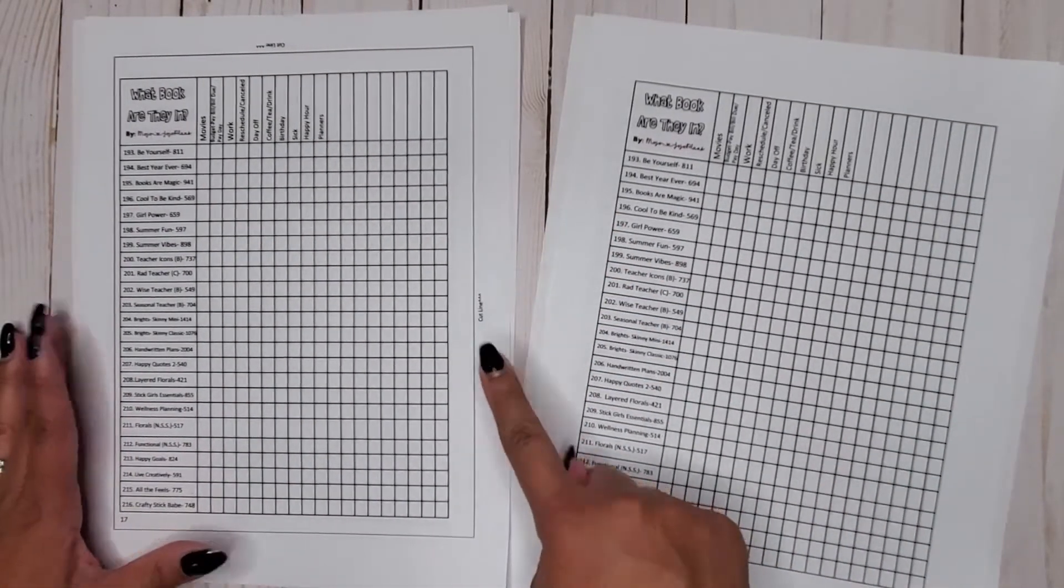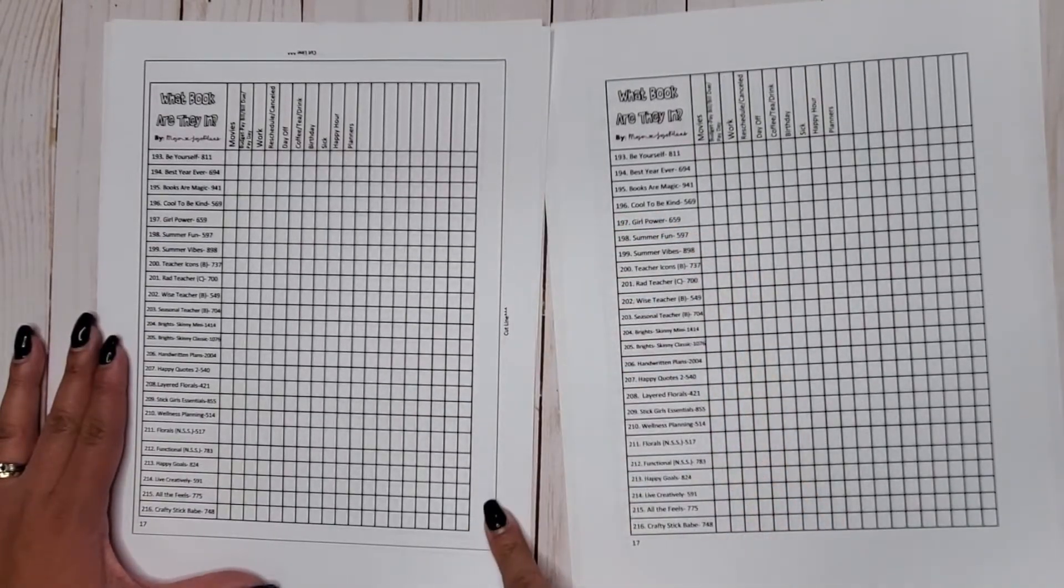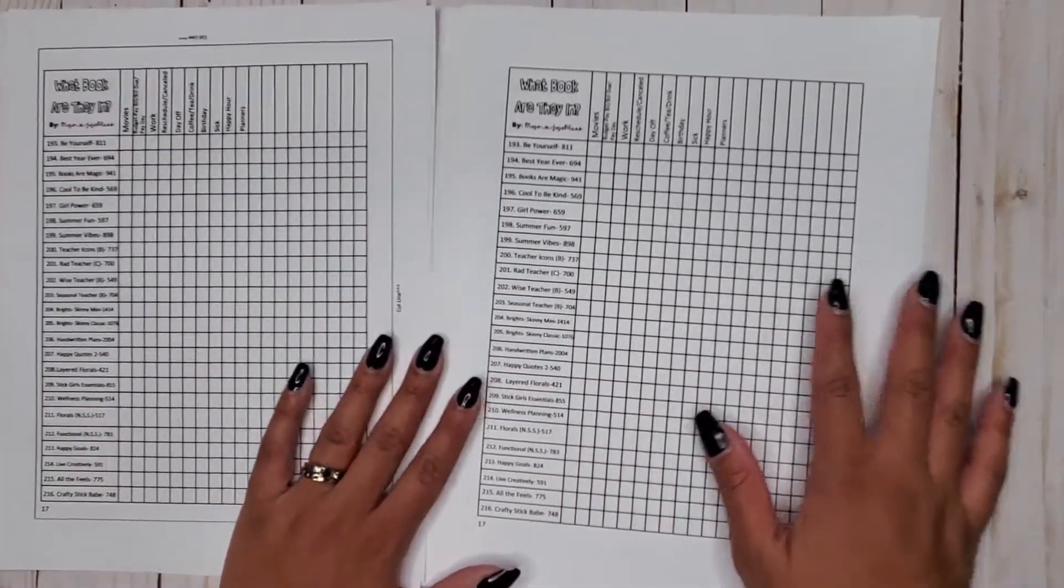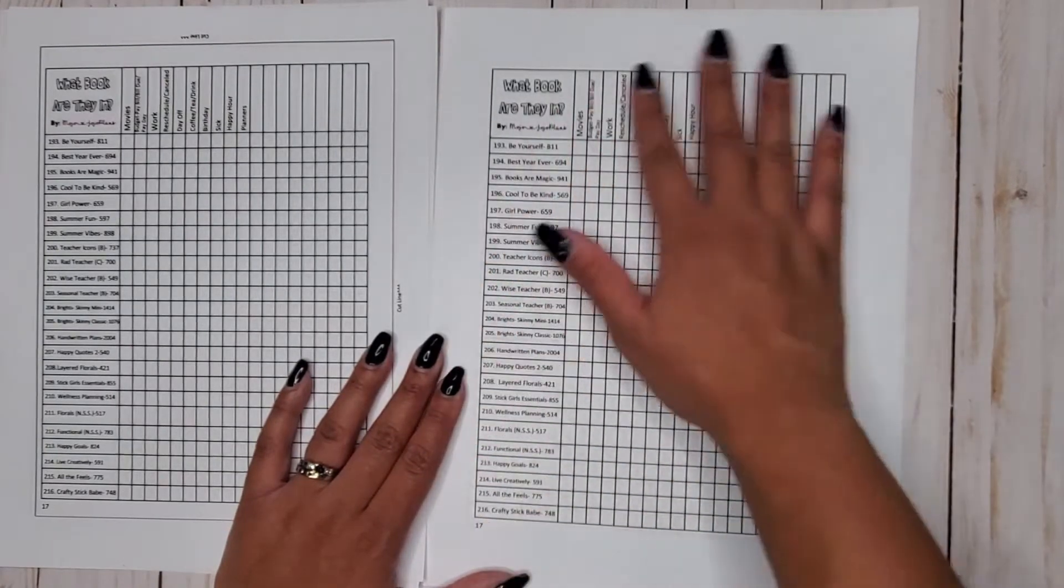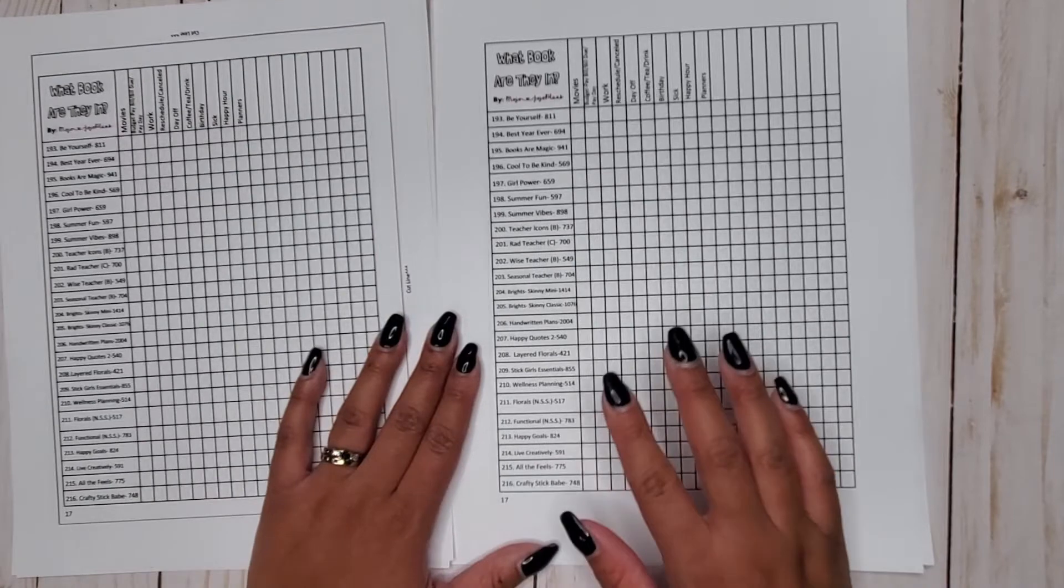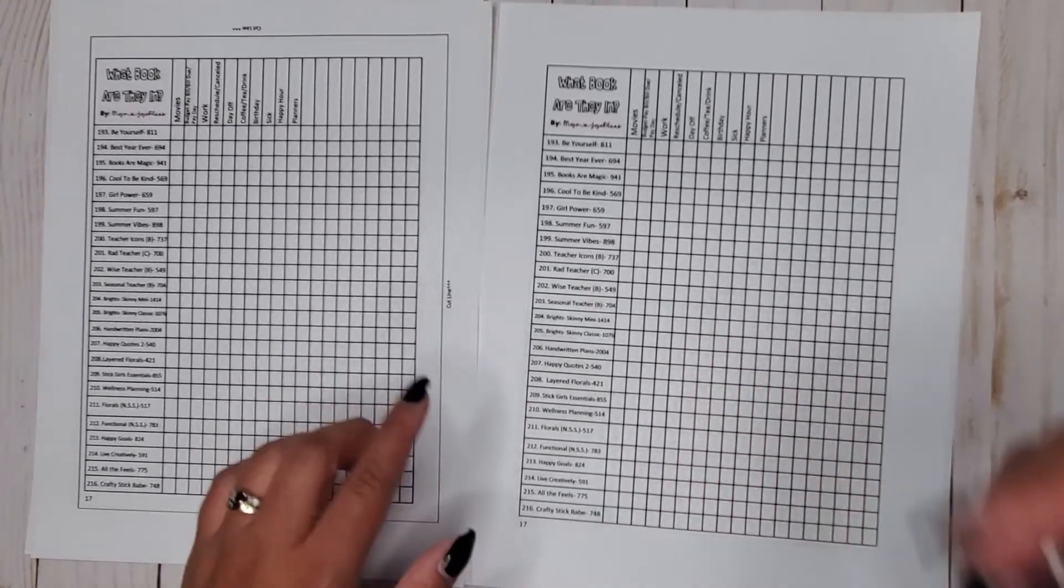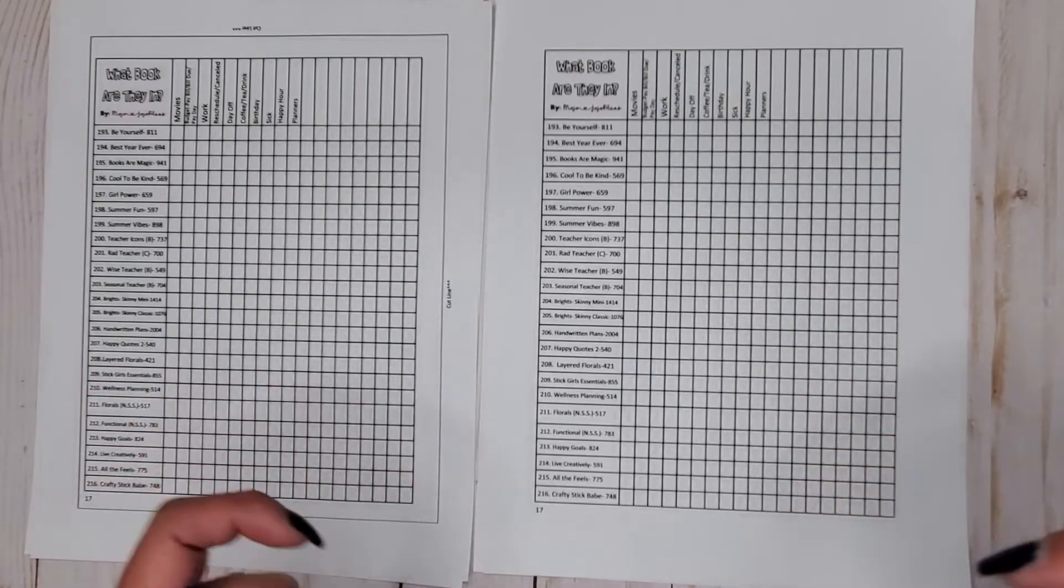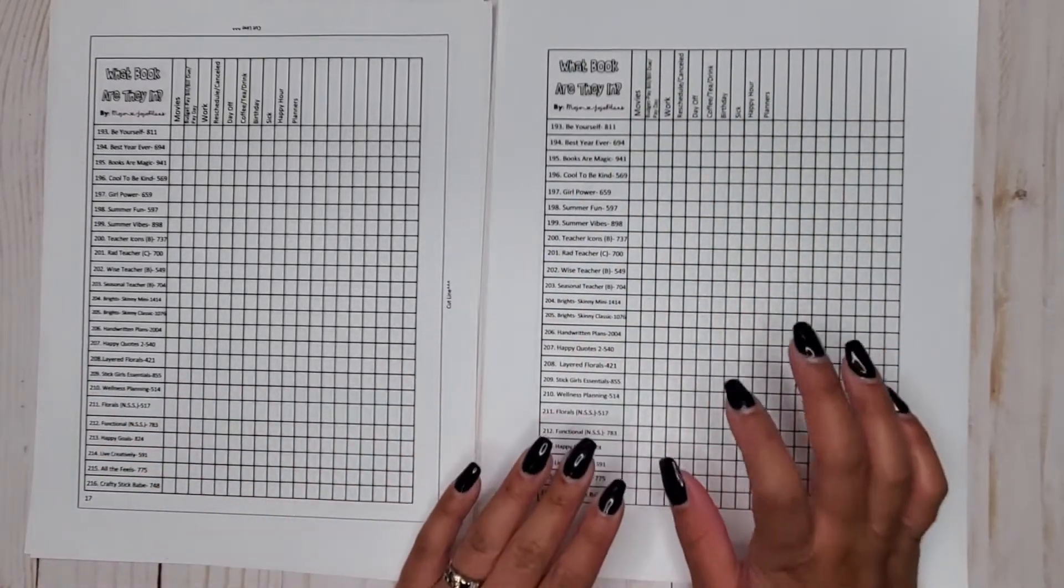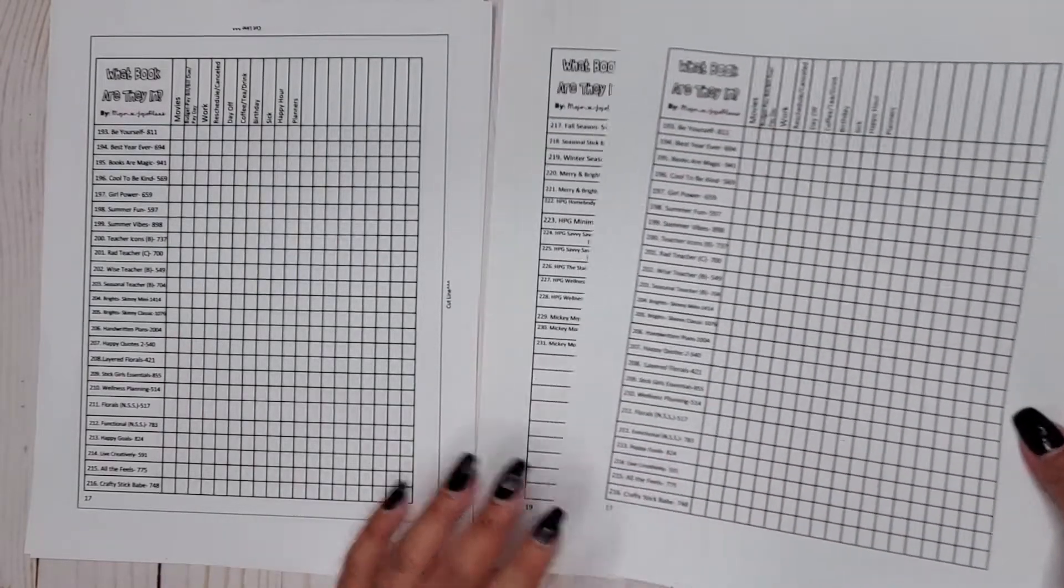I have two different versions: I have a version that does not have this cut line on it. This cut line is good if you're going to print it on regular paper and cut it out, it has a space for you to punch it. But if you want to print it on happy planner classic size paper, I have the version for you without the cut line and I will make sure to link the video on how to do that down below in the description.